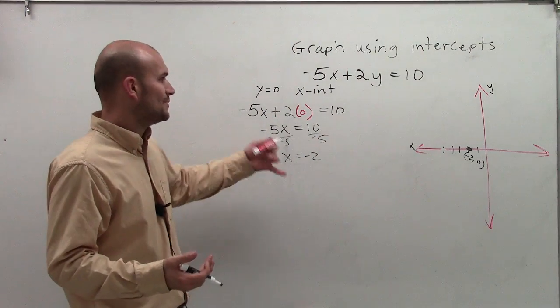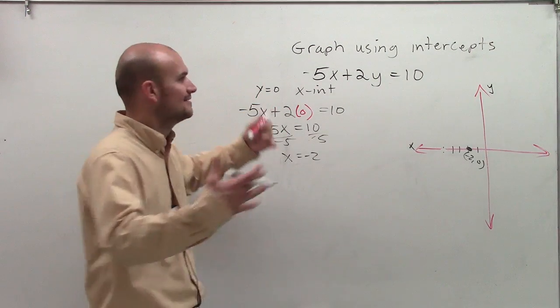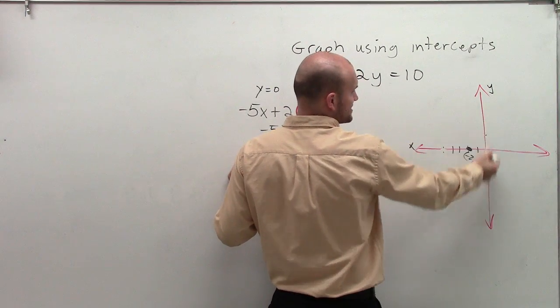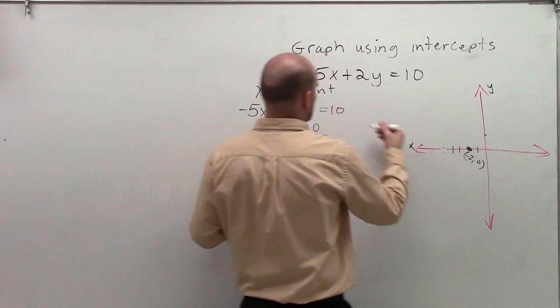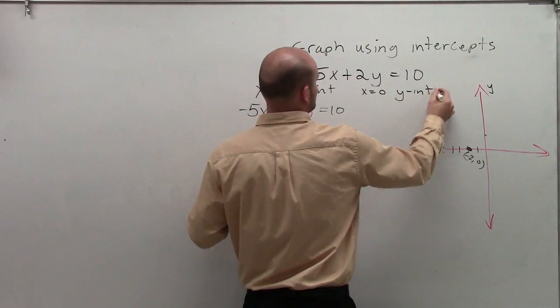All right. So then, guess what? So to find the x-intercept, I put y equals 0. What do you think you're going to want to do for the y-intercept? x equals 0. And think about it. Right here, what's the x-value on this intercept, wherever it crosses? 0. So we say x equals 0 for the y-intercept.